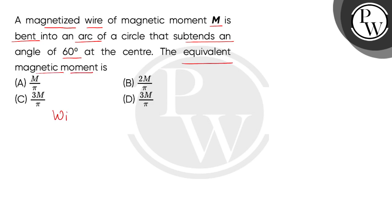So children, the question is given. First of all, a magnetized wire, this wire's magnetic moment is given as M. If we represent this wire, then we can transform it into an arc of a circle. The arc subtends at the center an angle of 60 degrees. We have to find what the new magnetic moment of this arc is going to be.